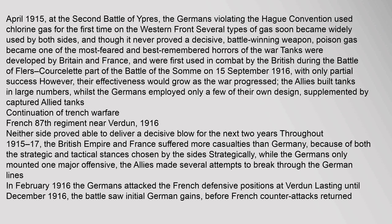On 22 April 1915, at the Second Battle of Ypres, the Germans, violating the Hague Convention, used chlorine gas for the first time on the Western Front. Several types of gas soon became widely used by both sides, and though it never proved a decisive battle-winning weapon, poison gas became one of the most feared and best-remembered horrors of the war. Tanks were developed by Britain and France, and were first used in combat by the British during the Battle of Flers-Courcelette, part of the Battle of the Somme, on 15 September 1916, with only partial success. However, their effectiveness would grow as the war progressed; the Allies built tanks in large numbers, whilst the Germans employed only a few of their own design, supplemented by captured Allied tanks.